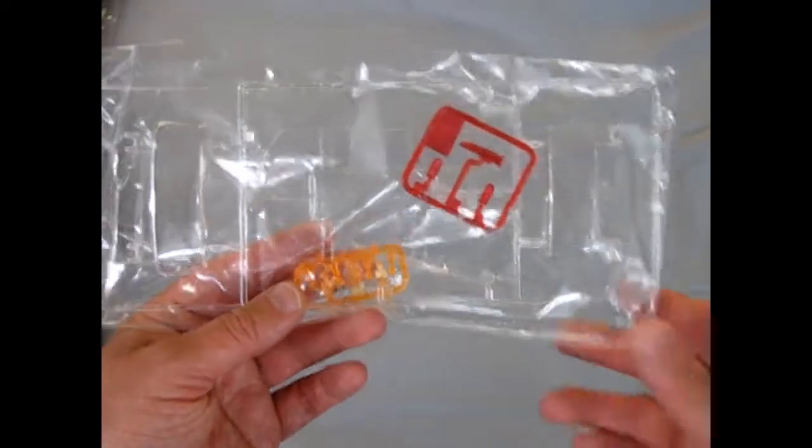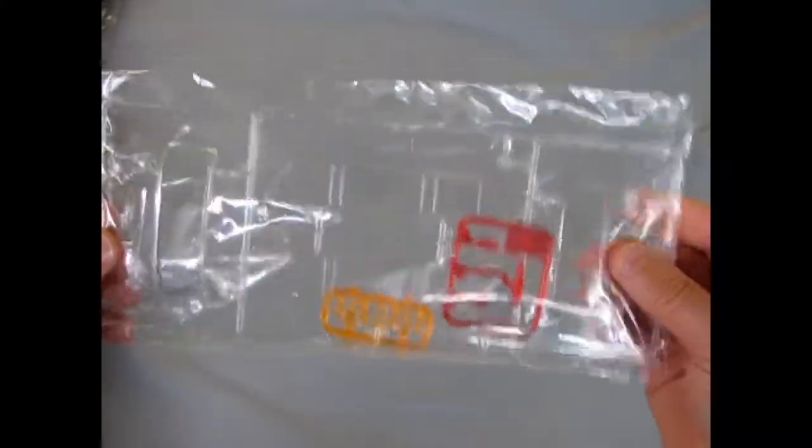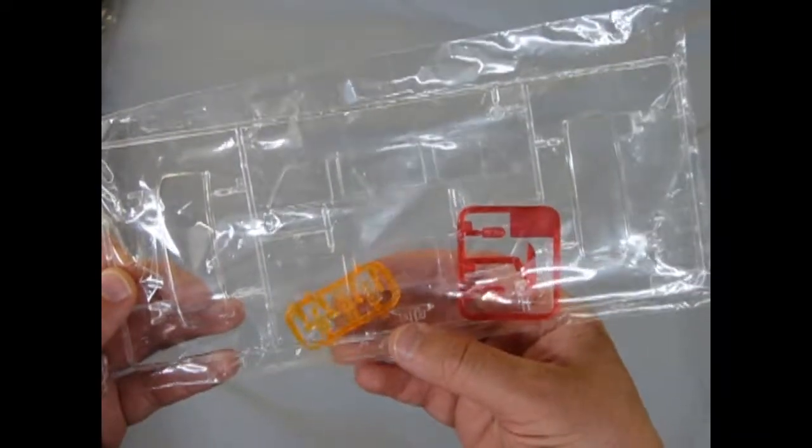Then of course, getting back to our glass again. I'm going to keep this in the bag just to keep them from scratching. But you do get red tail lights, a red hood emblem, and amber turn signals as well as the clear windows.